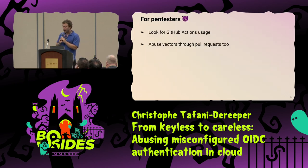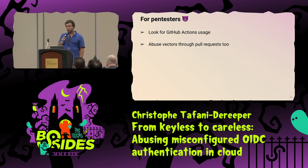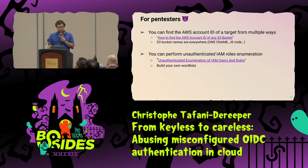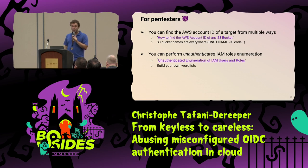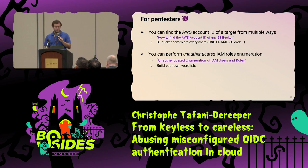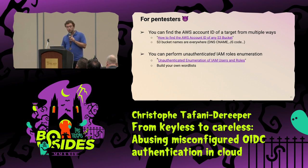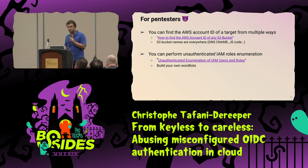If you're a pen tester, it's interesting to figure out if your target is using GitHub Actions. There are also abuse vectors for pull requests — if you open a pull request and change the CI code, you might be able to steal credentials. Typically, if you find an S3 bucket, there's a way to get the AWS account ID from it whether the bucket is public or private. S3 bucket names are everywhere — in CNAMEs, DNS, JavaScript code, passive DNS. From there you can perform unauthenticated enumeration: with a wordlist of IAM role names you can check if a role exists in that account. It's easy to build a wordlist for CI/CD role names like 'github-actions' or 'ci' and figure out if one is vulnerable.